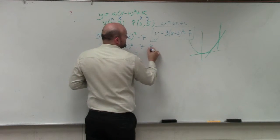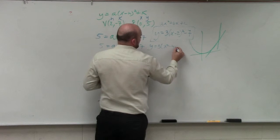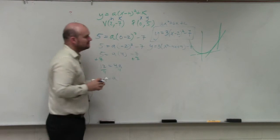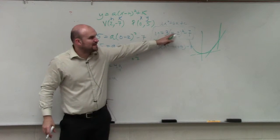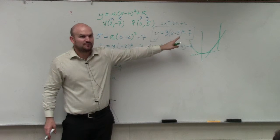So it'd be y equals 3 times x squared minus 4x plus 4 minus 7. Does everybody see what I did? I just did x minus 2 times x minus 2. I did it in my head. You might have to write it out.